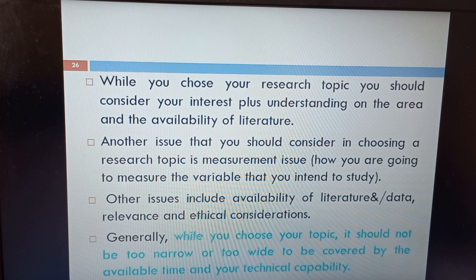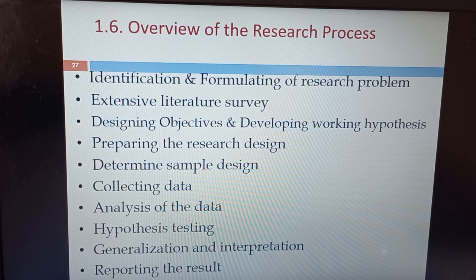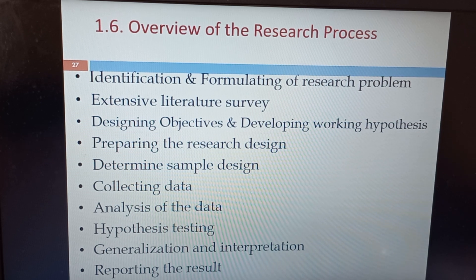Assume you have already chosen your research topic — what's next? The overview of the research process is: identification and formulation of the research problem; extensive literature survey; designing objectives and developing a working hypothesis; preparing the research design; determining the sample design; actually collecting data from respondents; analyzing, presenting, and organizing the data; testing your hypothesis; generalization and interpretation; and finally, reporting the result. This is the research process you should follow while conducting a study.